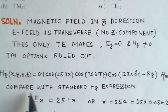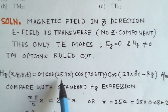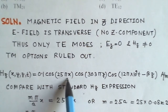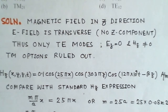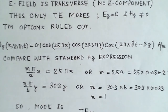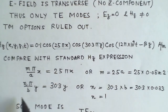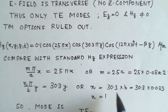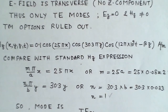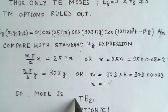When we compare this equation with the standard equation of the magnetic field in a rectangular waveguide, we notice that the term (mπ/a)x corresponds to 25πx. Solving, m = 25 × a = 25 × 0.08 = 2. Similarly, the term (nπ/b)y corresponds to 30.3πy, which gives n = 1. So m = 2 and n = 1.